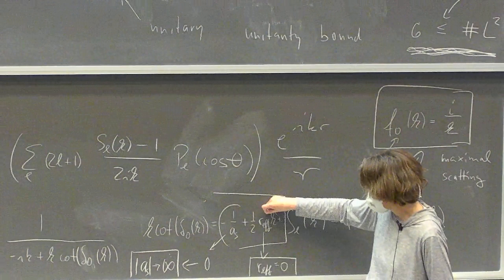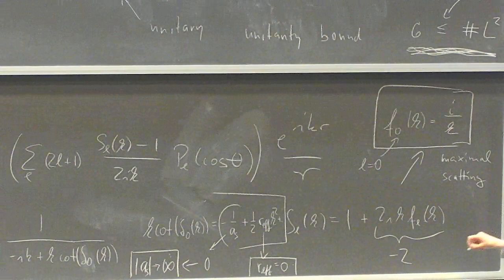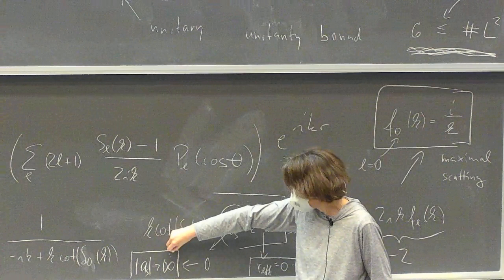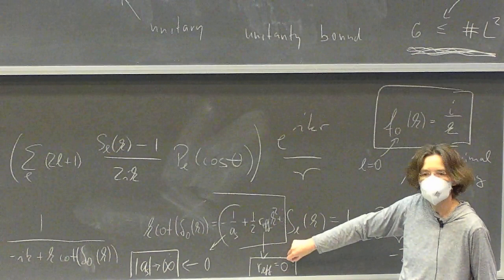So we want that S-wave scattering length to be infinitely large and we want the effective range, the shape parameter, and whatever else comes in that expansion to be equal to zero. When we live near unitarity, we can make the scattering length a little bit less than infinity and also turn on the other parameters in our theory.